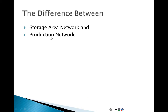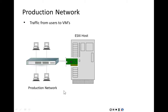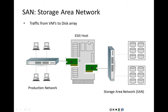The production network is just the regular network. Users and workstations connect to the switch, which connects them to the ESXi host. The production network carries traffic from users to the virtual machines. A storage area network carries traffic from the virtual machines to the disk arrays. A production network can be 100 meters across, but a storage area network is contained in one room — no more than 10 feet, contained in the data center.